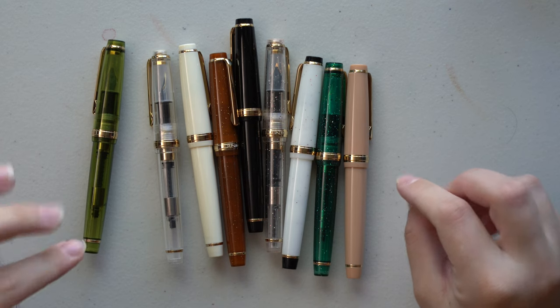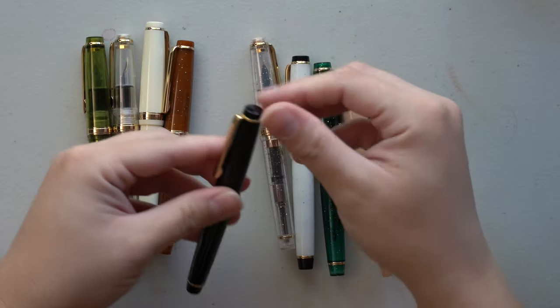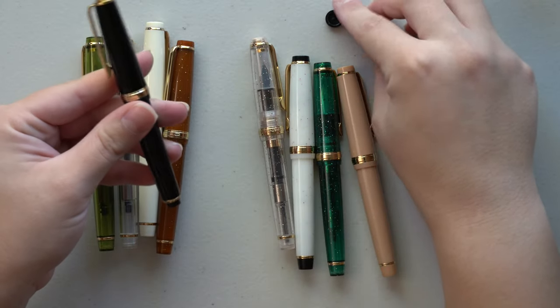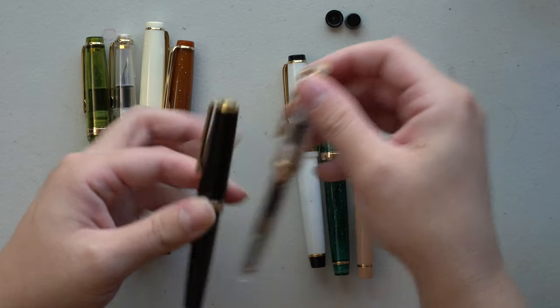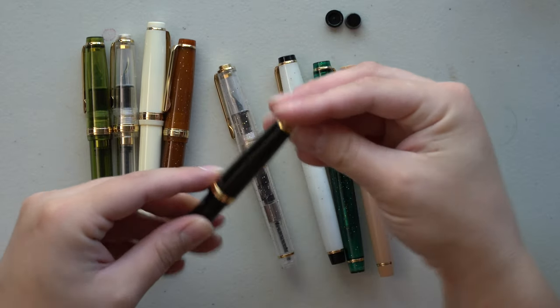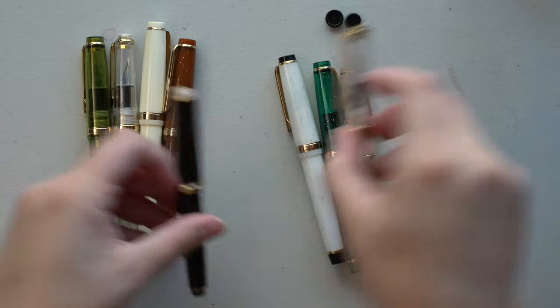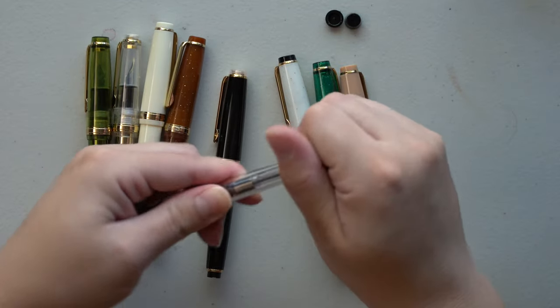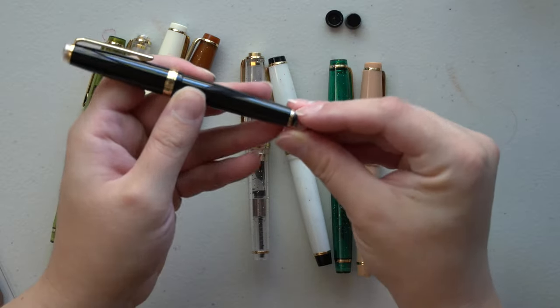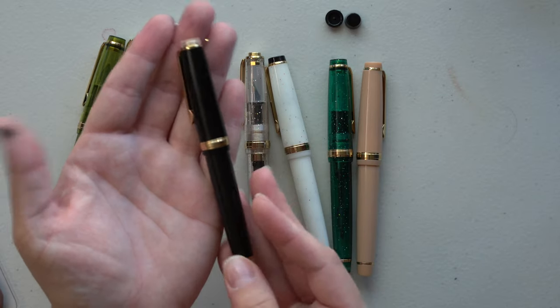All right. So now that we've named them off, I want to make a Franken pen. And the color that I want to go with is black, which is one of the ones that I inked up. So I'm going to take the finials off of the black one. And I really wanted to put clear on the black. It's giving the platinum 3776 heart vibes with the black barrels in the clear caps, which I believe there's a white version too, but I really wanted to see what this would look like with clear finials. And I think it's so pretty. Wow. Okay. Yeah. I'm definitely going to leave that one like that.